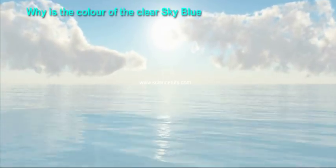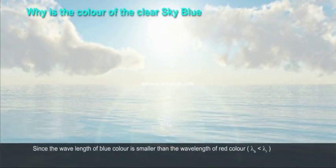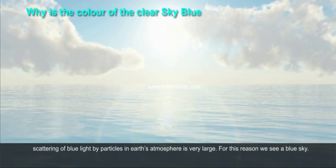Why is the color of the clear sky blue? Since the wavelength of blue color is smaller than the wavelength of red color (lambda_b less than lambda_r), scattering of blue light by particles in Earth's atmosphere is very large. For this reason we see a blue sky.